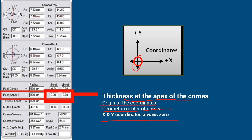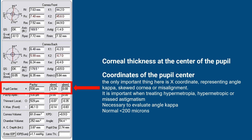At the pupil center, the important value is the X coordinate, which represents angle Kappa, a skewed cornea, or misalignment. The normal value is roughly less than 200 microns. This is necessary to evaluate angle Kappa.